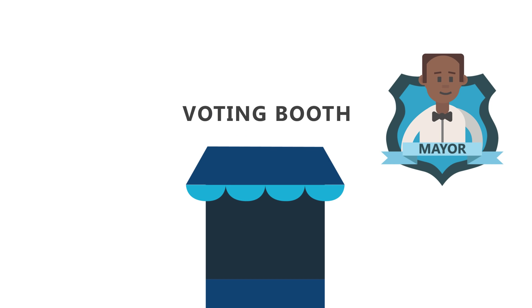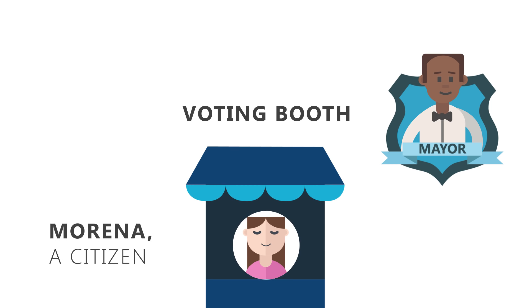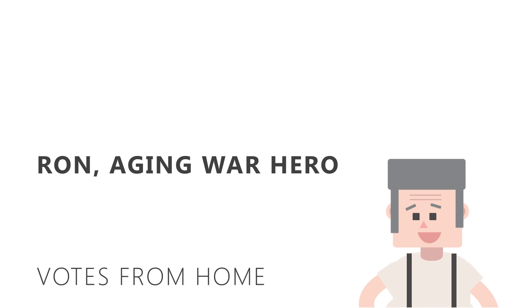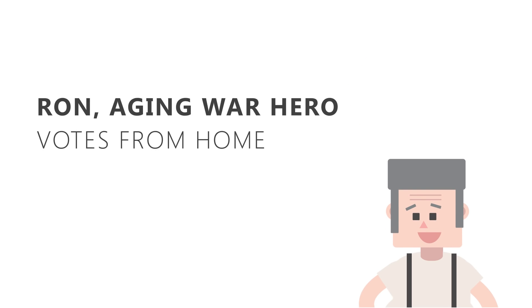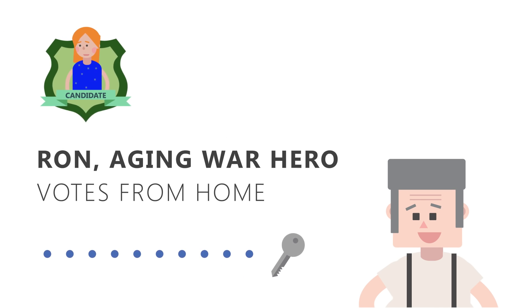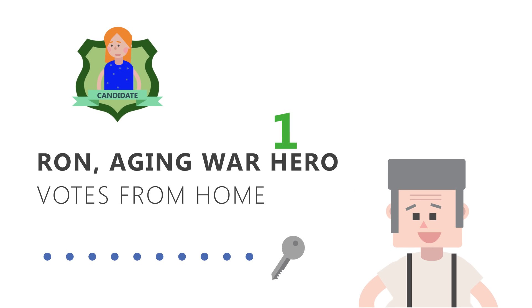The voting booths soon open and Marina, a citizen of Serenity, is the first to arrive and accesses the poll that Cameron created and votes for Nathan. Ron, an aging war hero of Serenity, votes from the comfort of his own home by accessing the polls with his passphrase and casts a vote for Gina.